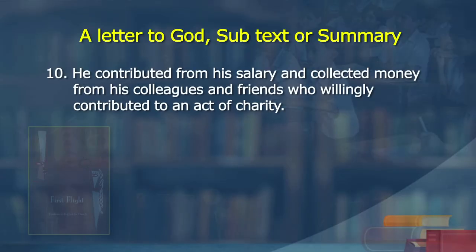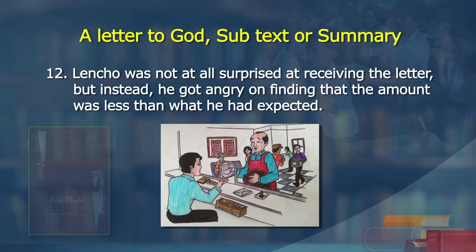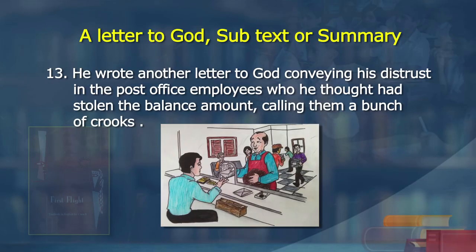Lencho was upset and disheartened but had total belief and unwavering faith in God. He decided to write a letter to God, explaining his situation and asking for help — requesting 100 pesos to sustain and raise another crop. He went to the post office and posted his letter addressed to God. The postmaster was amused after reading the letter but then got motivated to do something for the farmer so as to keep his immense belief intact. He contributed from his salary, collected money from colleagues and friends, and was able to gather 70 pesos, which he put in an envelope signed as God and sent to Lencho.